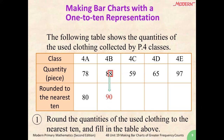For 59, the units place is also larger than 5, therefore we will have to round it up and it will become 60. For 65, the units place is a 5, which is equal to 5, so therefore we will have to round up and the number will become 70. For 97, the units place is larger than 5 as well, therefore we will have to round it up and it will become 100.